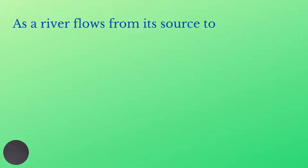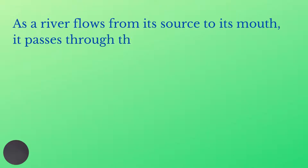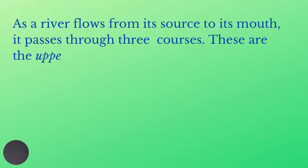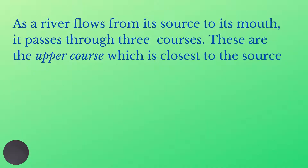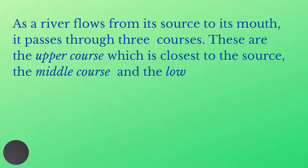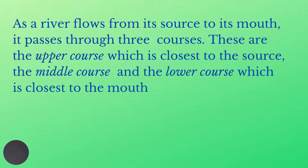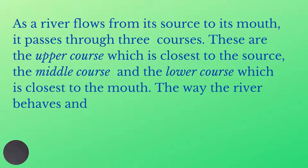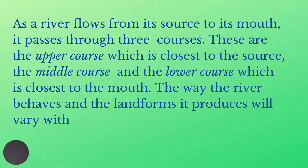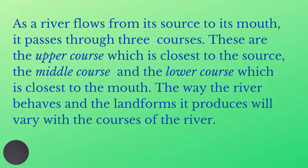Welcome back to my channel, everyone. Today we are going to be focusing on the development of landforms in the upper course. As rivers flow from their source to their mouth, they usually pass through three main courses: the upper course, which is closest to the source and located in the mountains; the middle course; and the lower course, which is usually closest to the sea, where the mouth is. The way the river behaves and the landforms it produces will vary with the courses of the river.